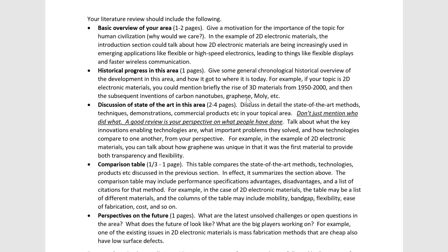For 2D electronic materials, you could talk about the various materials available and their figures of merit — how do their mobilities compare, ease of fabrication, commercializability, toxicity, and fundamental electronic properties. Things like mobility, band gap, typical resistivity, hot electron effects, and so on. If someone reads your paper, they should get a clear idea of the potential benefits and disadvantages of the different approaches.